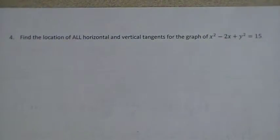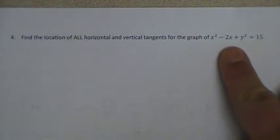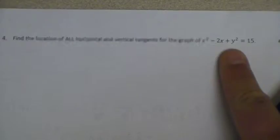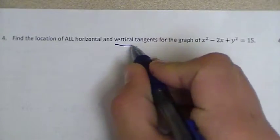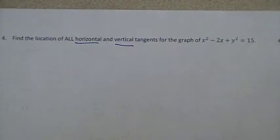This is the problem from the back of the quiz on section 2-8, and it was a question that asked you to find all horizontal and vertical tangents for the graph of this relation. So this is an implicit relation, and we need to do two things. We need to find where we have horizontal and also vertical tangents.